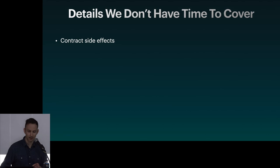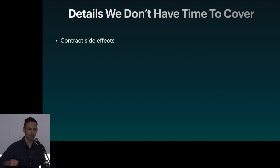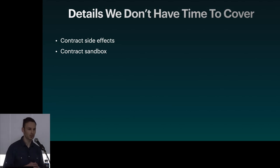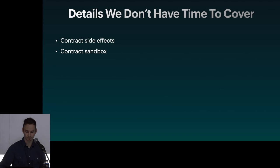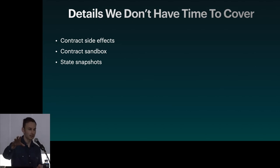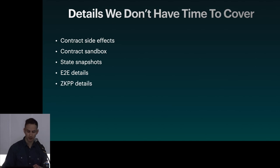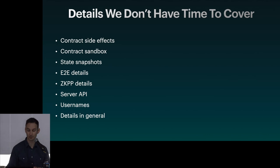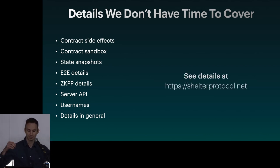Details we didn't have time to cover: contract side effects — the boundary between contracts and applications. Contracts cannot have side effects in the processing step because that could result in different state across different clients. Also: the contract sandbox, state snapshots, the details of how end-to-end encryption works, ZKP details, the server API, and usernames. But if you're interested in those details, most of them are now live on shelterprotocol.net.